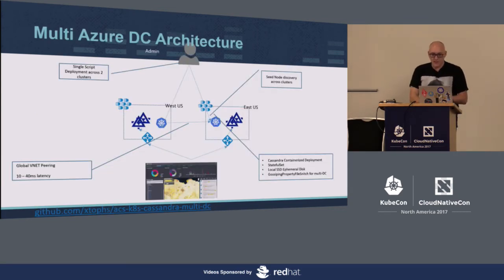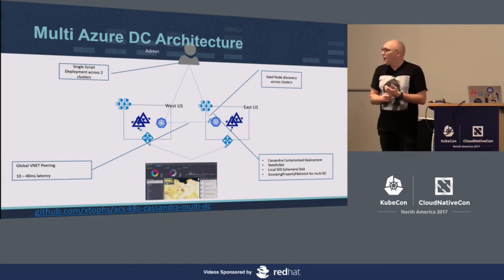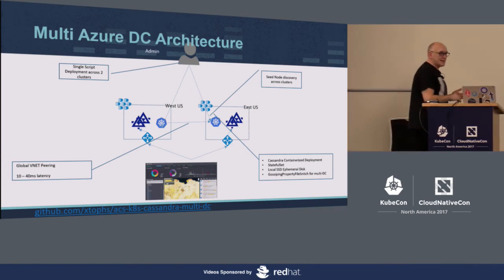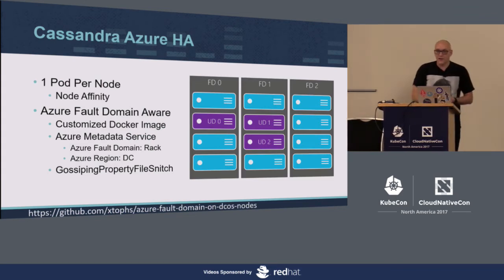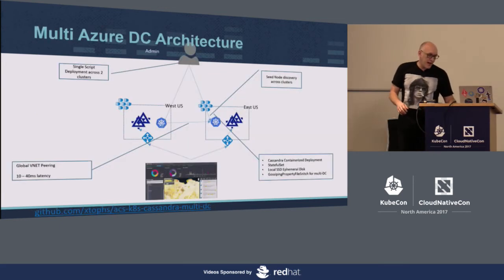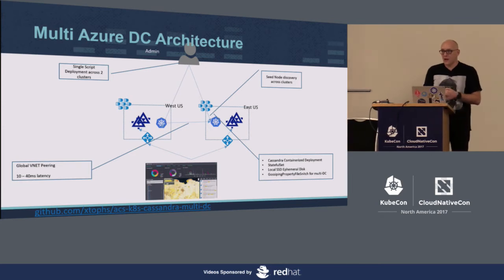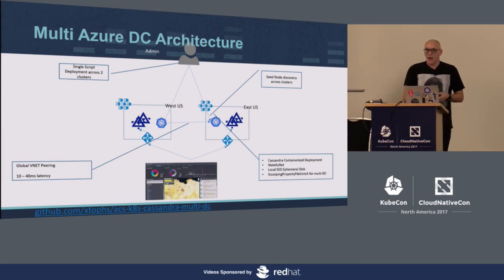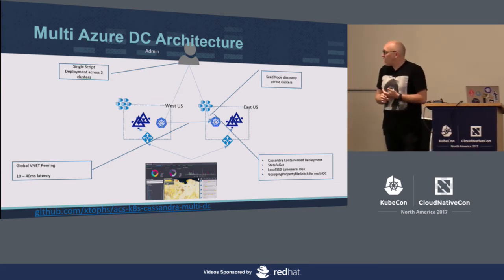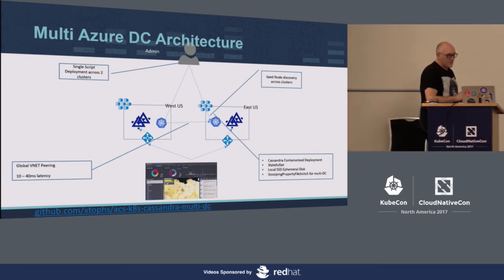This enabled us to do a multi-Azure data center setup for high availability. We can take that container — because it has the data center and rack information baked into each Cassandra image — deploy it into two data centers, bring up two Kubernetes clusters, and provision a single Cassandra ring across those with a single line of script. We were quite proud to show that.